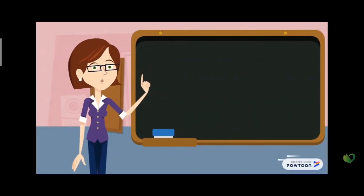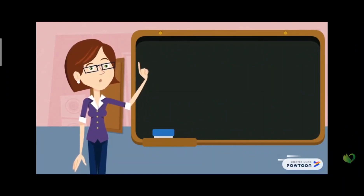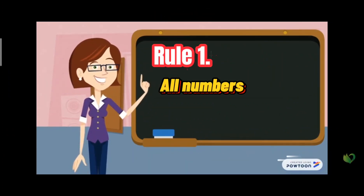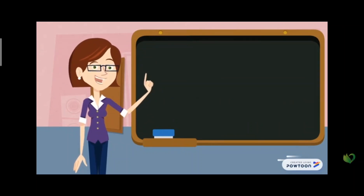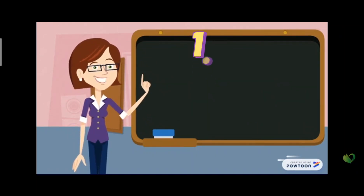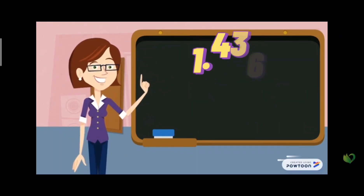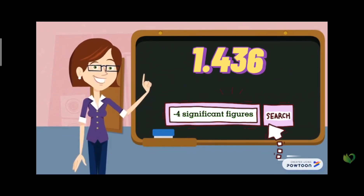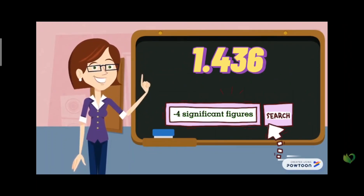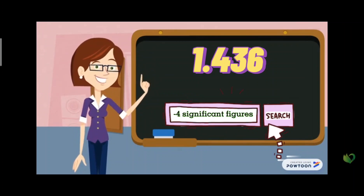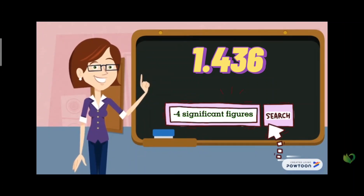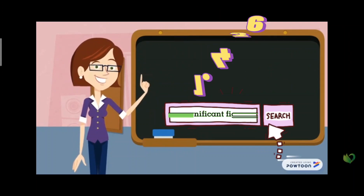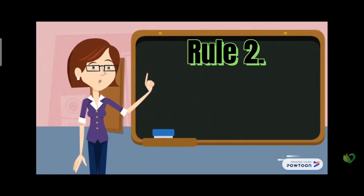What are the rules? Rule number one: all numbers that are not zero are significant. For this example, 1.436 has four significant figures. Every single one of these digits is significant because they are non-zero numbers.